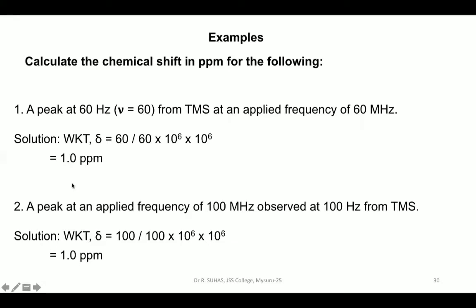Another example: a peak observed at 100 Hz from TMS at an applied frequency of 100 MHz. Substituting into the formula: delta equals 100 over (100 × 10⁶) × 10⁶. These cancel, giving 100/100 = 1 PPM. So the chemical shift of this particular peak is also 1 PPM on the NMR spectrum.